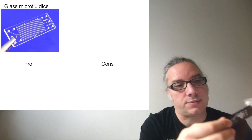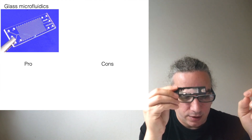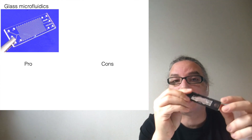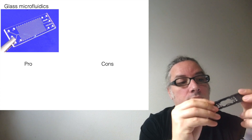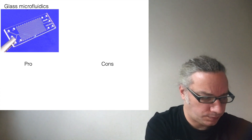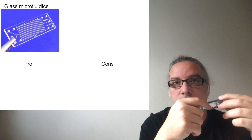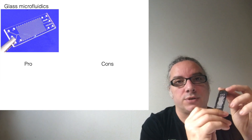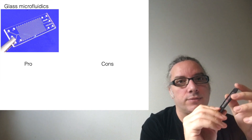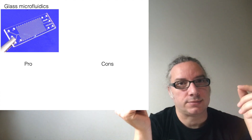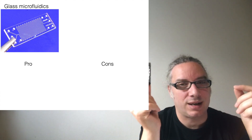The other problem, as you can probably see here, is that they are obviously fragile — you can break them quite easily. Those are usually done by etching the glass to make the channel and then attaching another piece of glass on top. That's the standard way of making glass microfluidics. Think about the pros and the cons of glass microfluidics.